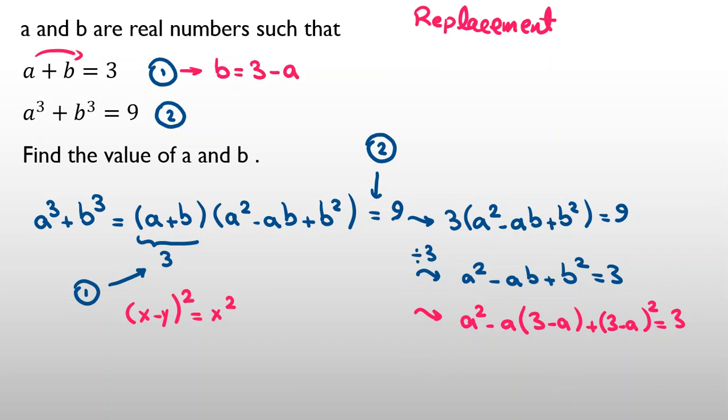Here will be a squared minus 3a plus a squared, plus 9 minus 6a plus a squared. Now, let's take 3 to the left hand side. It will be minus 3 equal to 0.